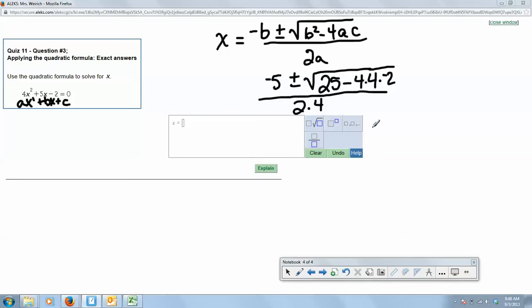We go a step further and we get negative 5 plus or minus. Here we're going to have 25, and then a negative times a negative is a positive, so this is going to end up being positive. And 4 times 4 is 16, and 16 times 2 is 32.